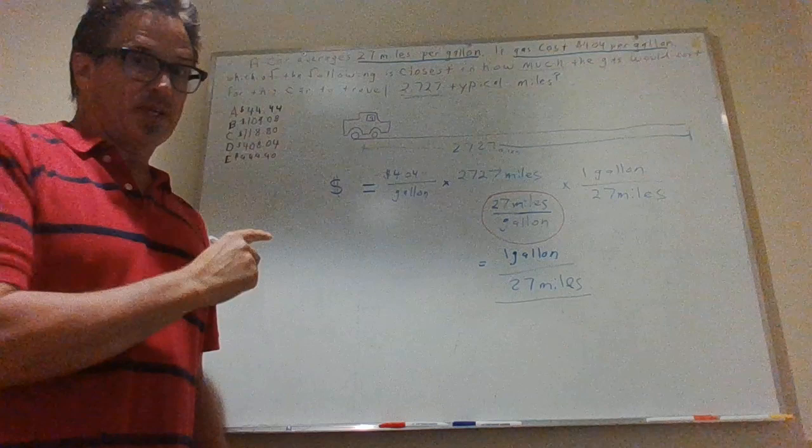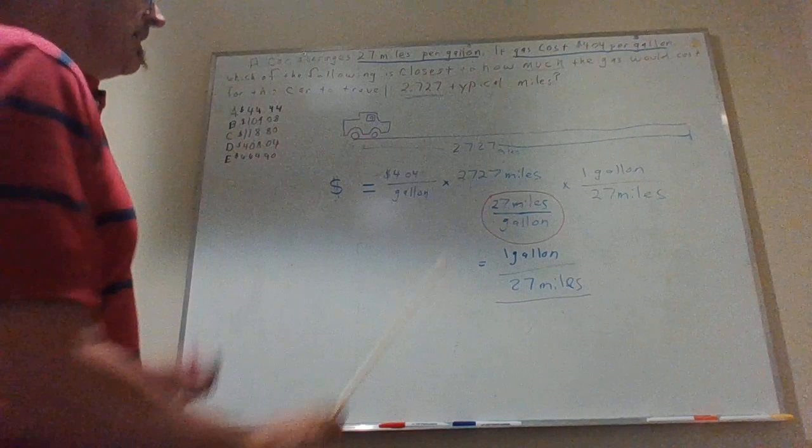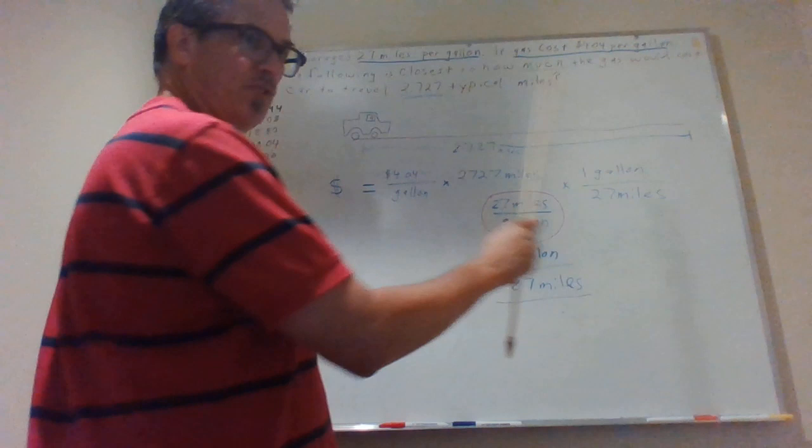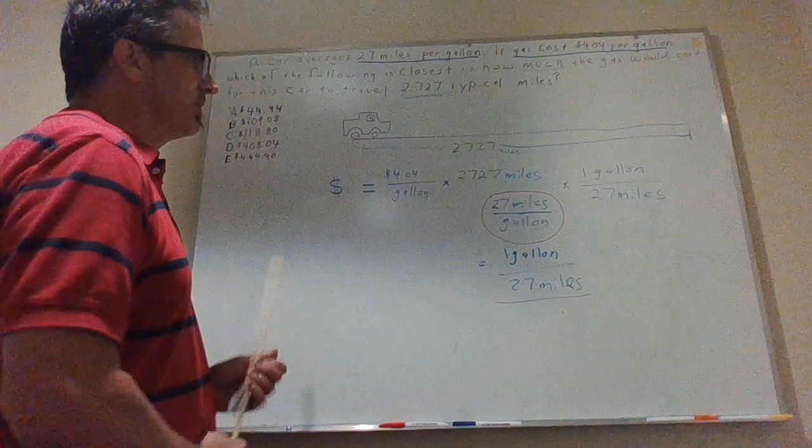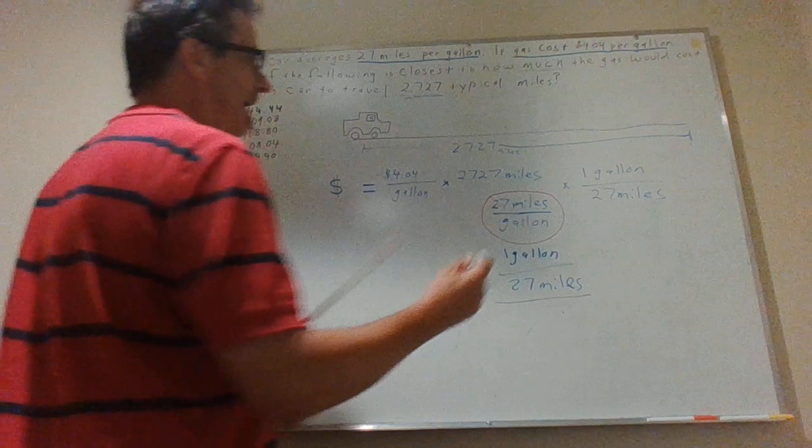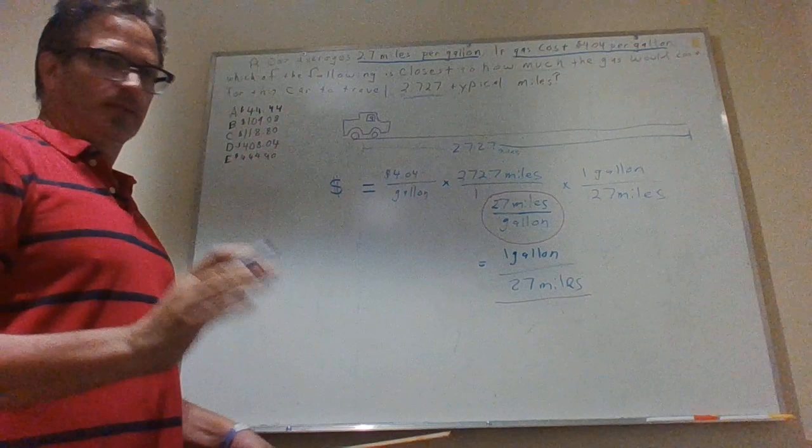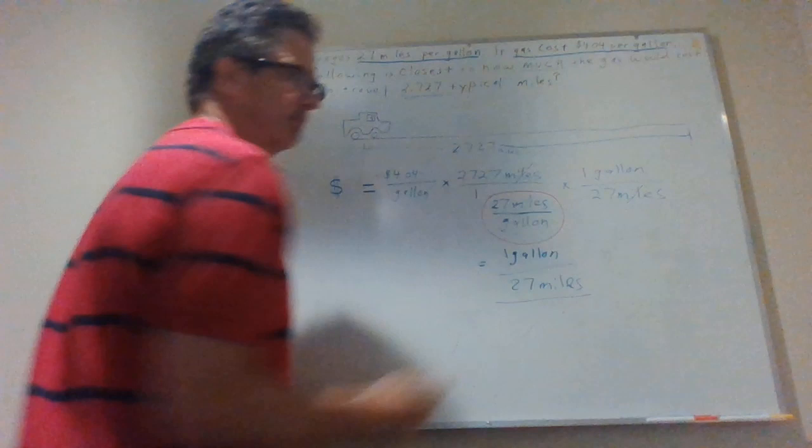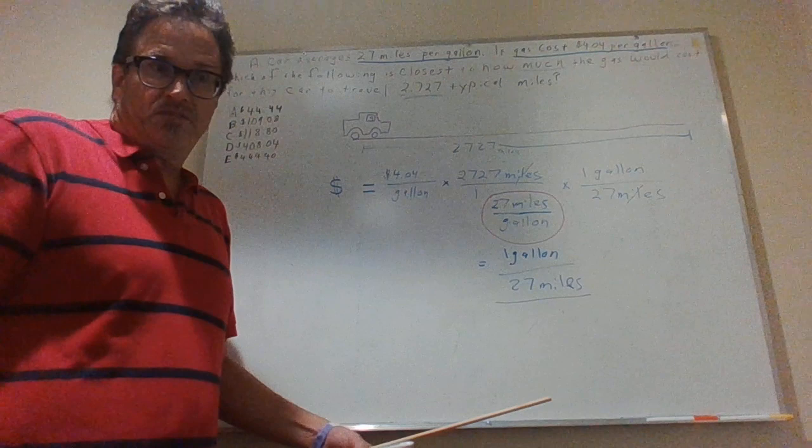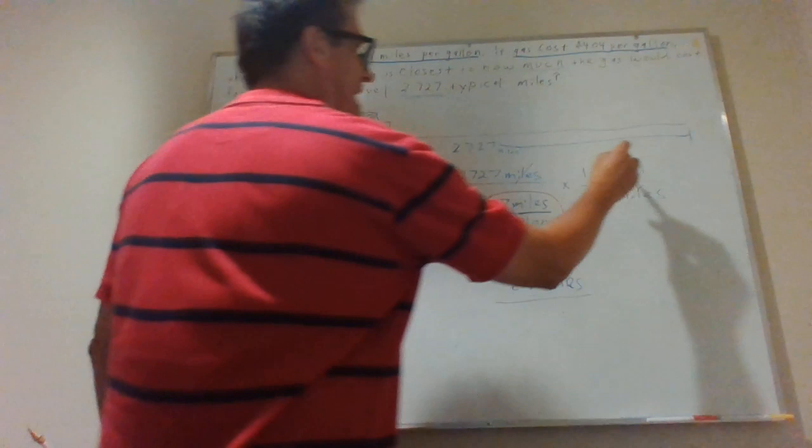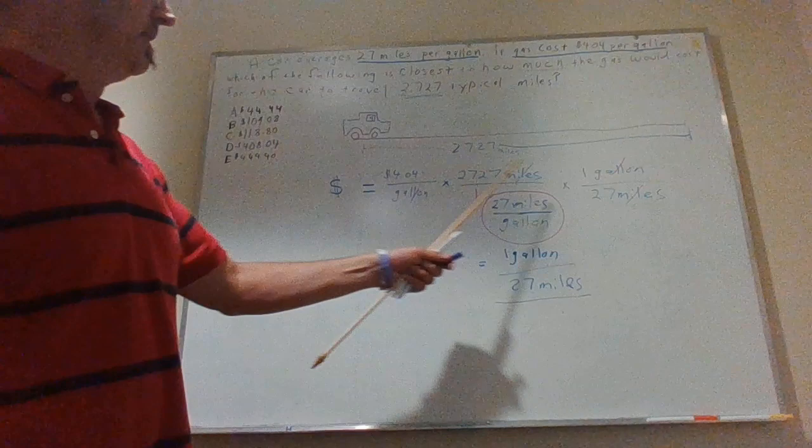Sometimes in math you don't worry about units. Sometimes you have to worry about units. This is one of those times you've got to worry about units. This is how many miles I went. This is how much gas the car uses. It uses one gallon every 27 miles. So look what happens here. I have miles. Any number over one is just that number. Miles will cancel with miles. Miles on top, miles on the bottom. Which is 6 over 6? What's pi over pi? Gallons over gallons? One. I got a gallon here and a gallon here. Let's look at the units that are left. These guys canceled. These guys canceled.